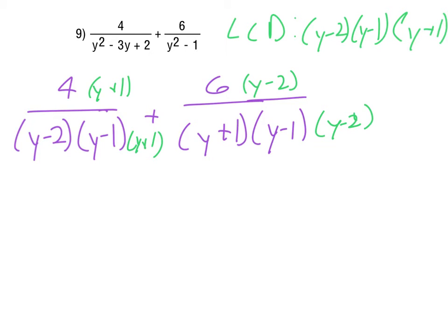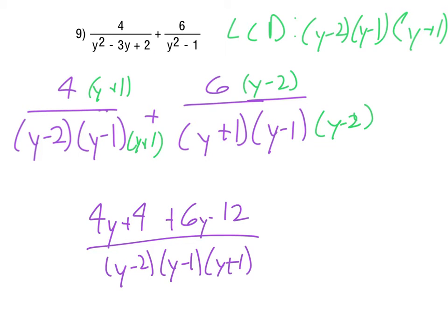For the 4, we end up with 4y plus 4. And for the 6, we get 6y minus 12. Now that is all over our LCD. And so we can just put those together like that. Not too tough when it's a nice addition problem like this. 6y minus the 12.